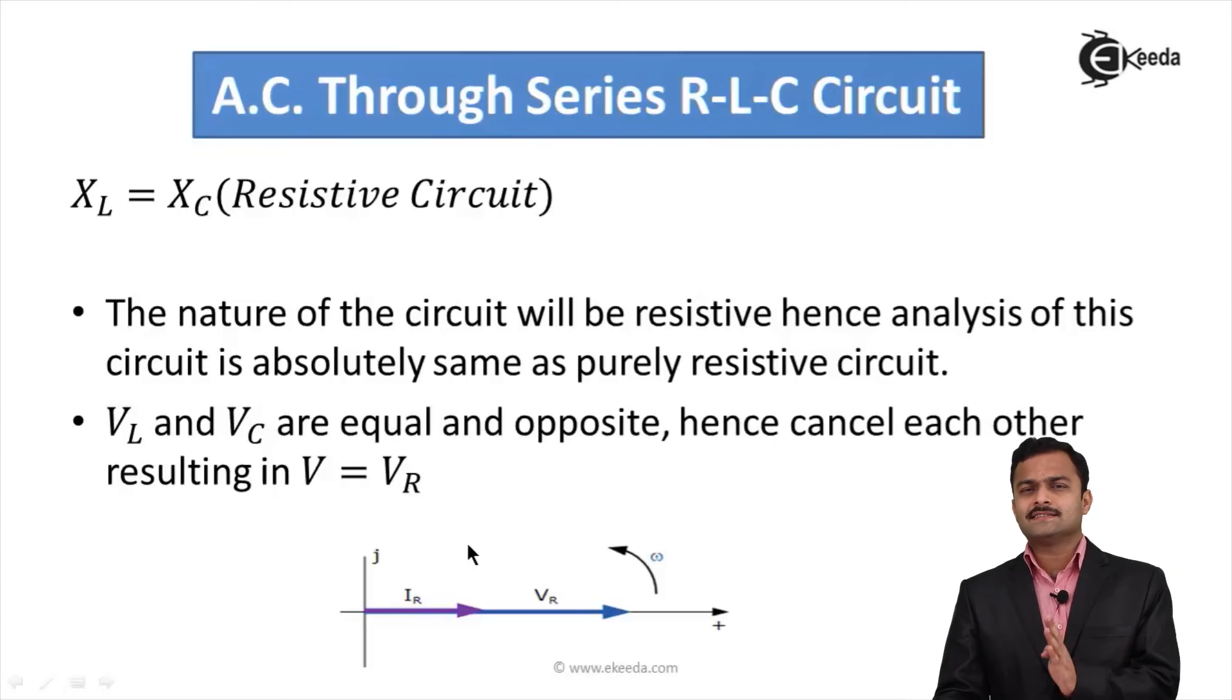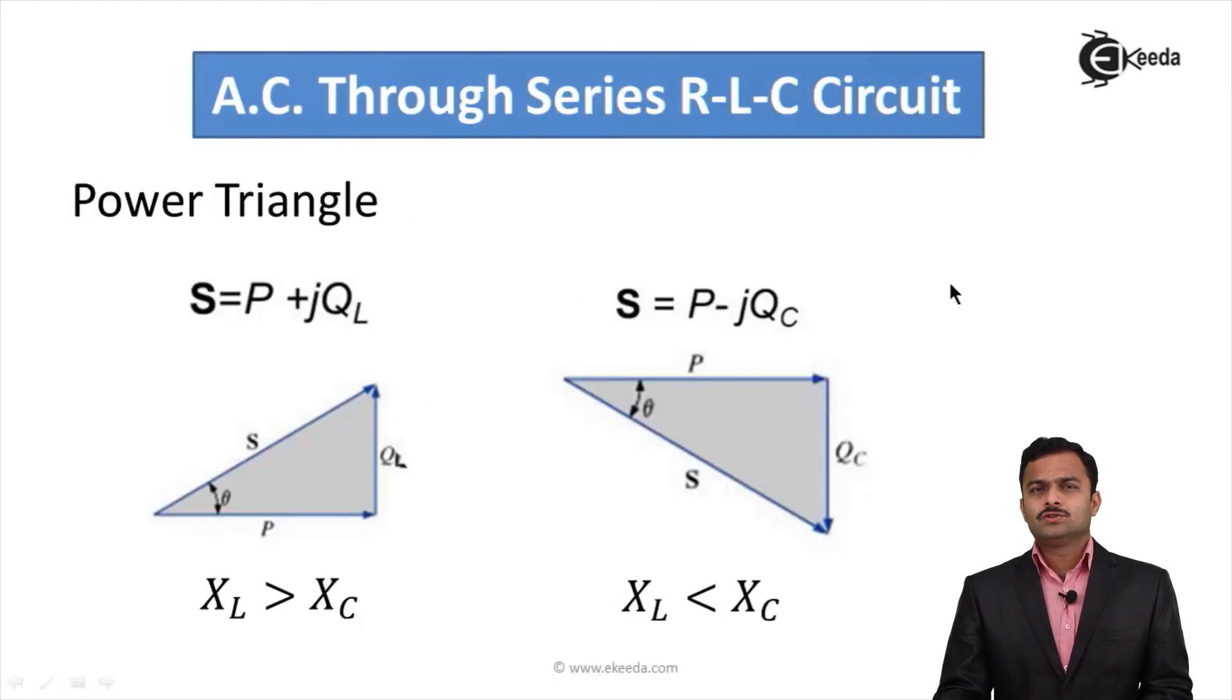We have seen all three cases. In one case it is inductive in nature, another case it is capacitive, and third case if it is nullifying each other's effect it will be resistive in nature. Power triangle is again same. This power triangle is for XL greater than XC, that means for inductive circuit. Here P, Q and S are shown along with angle φ. For capacitive circuit, this will be a power triangle P, Q and S. In capacitive circuit, XC will be greater than XL.